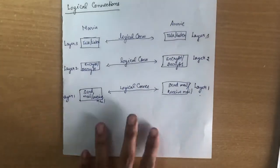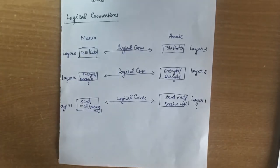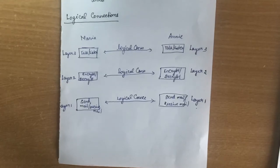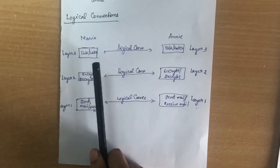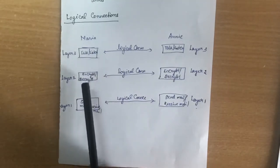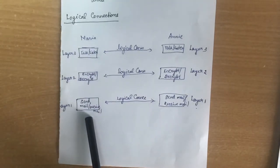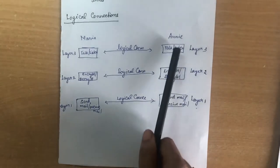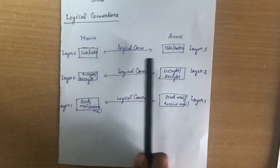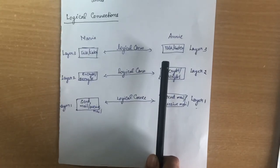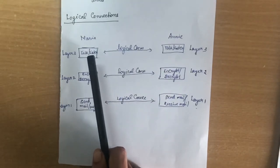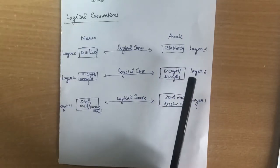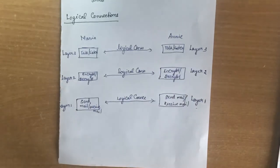Next, we will see what a logical connection is. In the case of a logical connection, there is an imaginary connection established between each layer. Even though the actual communication passes through layer three to layer two to layer one on one side, and then from layer one to layer two to layer three on the other side, there is a logical or imaginary connection established directly between the corresponding layers on Maria's and Annie's systems. This is called a logical connection.